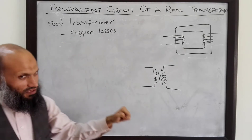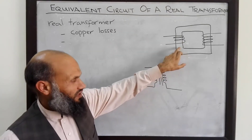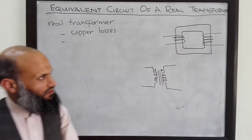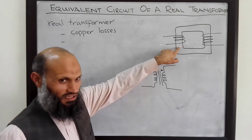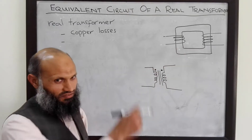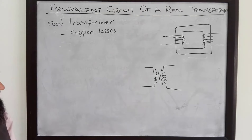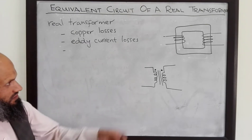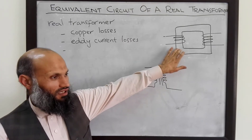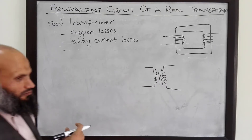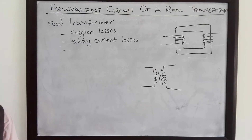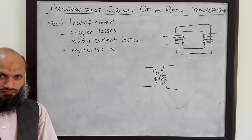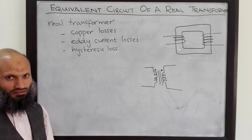Another source of power losses is eddy current losses. The changing flux which flows in the core of the transformer not only links with the primary and secondary windings but also links with the core itself. This induces a voltage in the core, causing currents to flow — these are called eddy currents — and their flow through a resistive path results in losses. Furthermore, there are hysteresis losses in ferromagnetic materials, where domains align and disalign with the magnetic field, resulting in energy loss proportional to the area of the hysteresis loop.